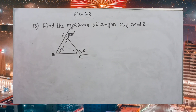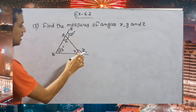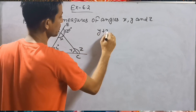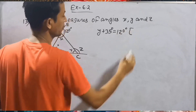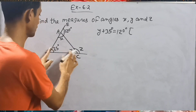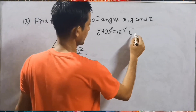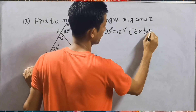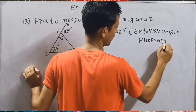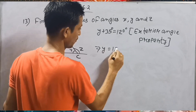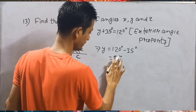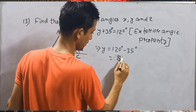Here you can see triangle ABC has two exterior angles: 120 degrees and Z. We use the exterior angle property. Y plus 35 degrees equals 120 degrees. So Y is equal to 120 minus 35 degrees, which gives Y equals 85 degrees.